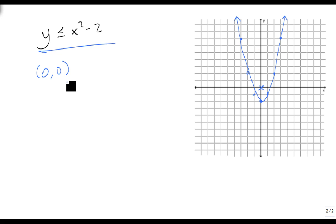So 0, 0, we plug it in, we get 0 is less than or equal to 0 squared minus 2, which is 0 minus 2. 0 is not less than minus 2, so this region gets ruled out, and instead I shade the outside.